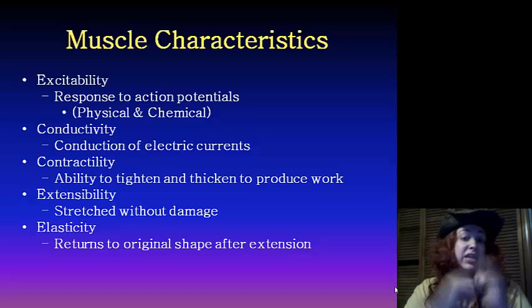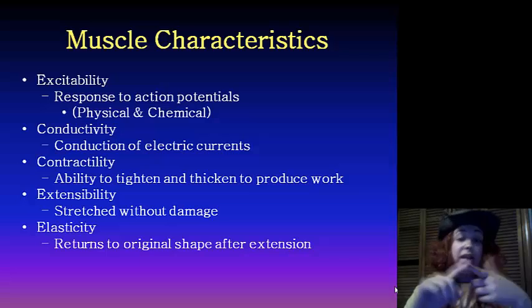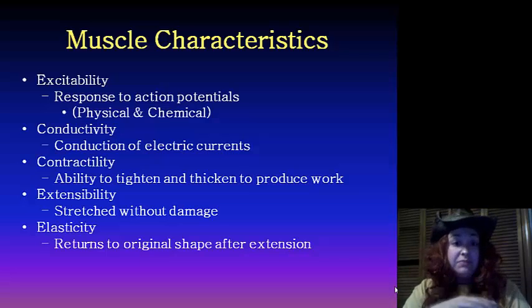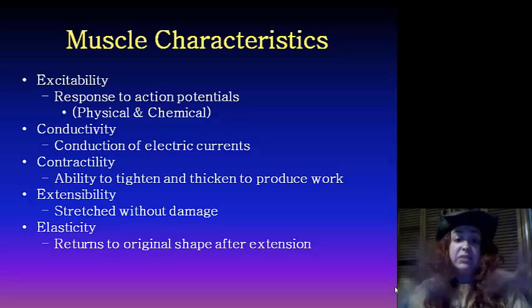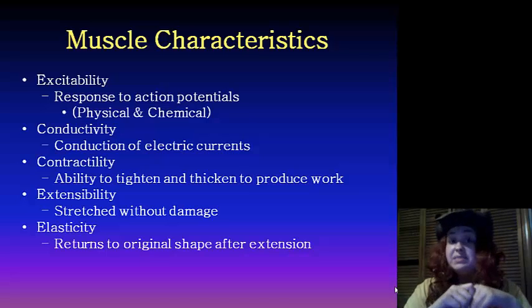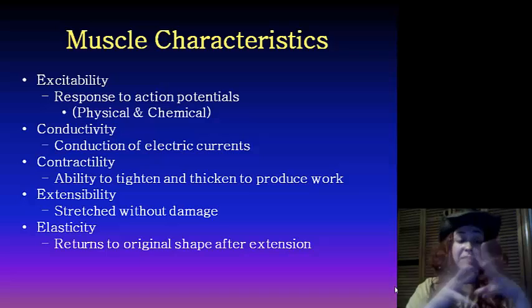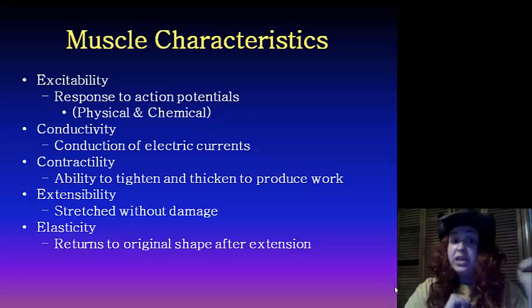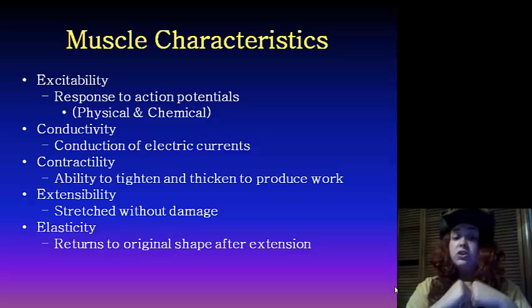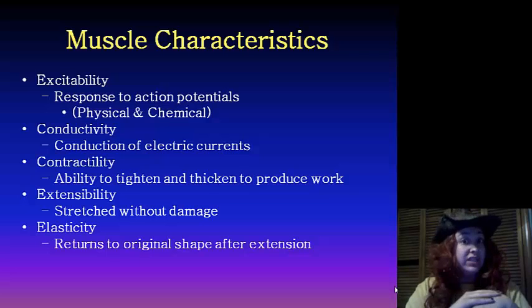We see conductivity, which means it conducts electrical current. We also see muscles have contractibility, which means they are able to tighten or thicken to produce work. We have extensibility, which means it can stretch without being damaged. And we have elasticity, which means it can return to its original shape after extension.